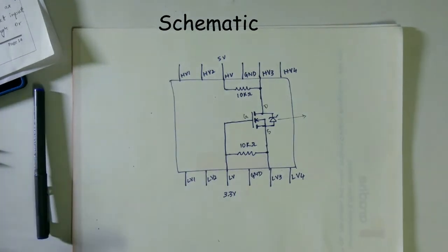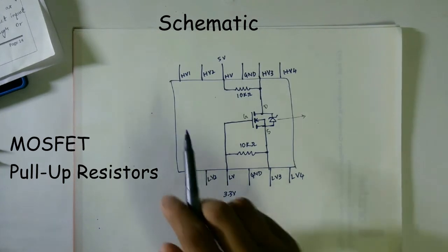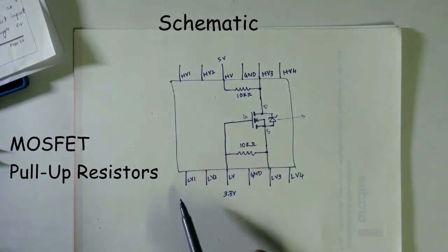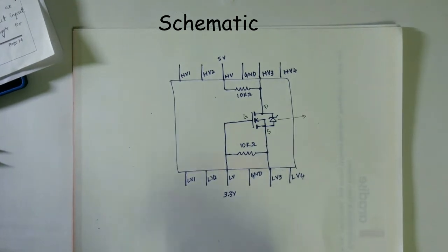I have drawn the schematic of the level shifter here, so it actually consists of three major components. Here as you can see we have HV1, HV2, HV3, HV4, LV1, LV2, LV3, LV4. So these represent four channels.